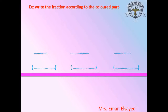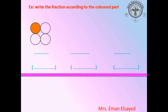So now let's see our first exercise: write the fraction according to the colored part. We have a set of circles. I have a group of circles, and I take one circle — that's why I colored it. What is the fraction of the shaded part? One over four — very good. I shaded one part and the total part is four: 1, 2, 3, 4. The fraction is one quarter.